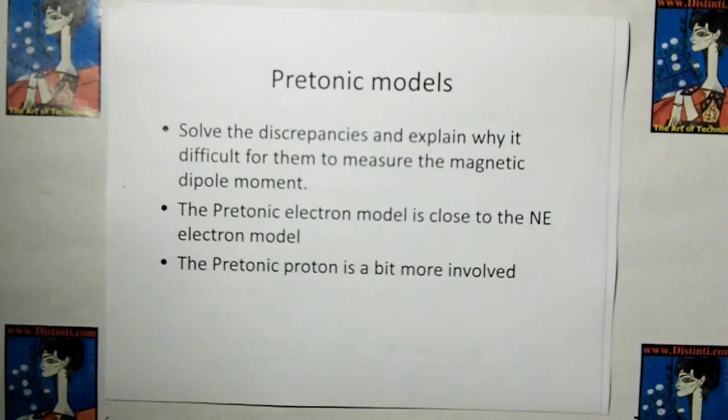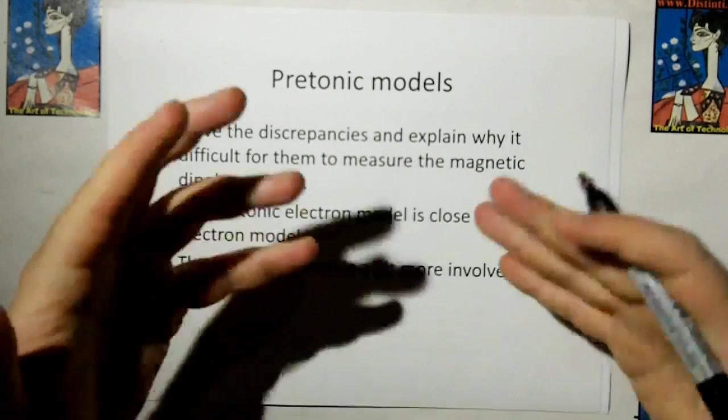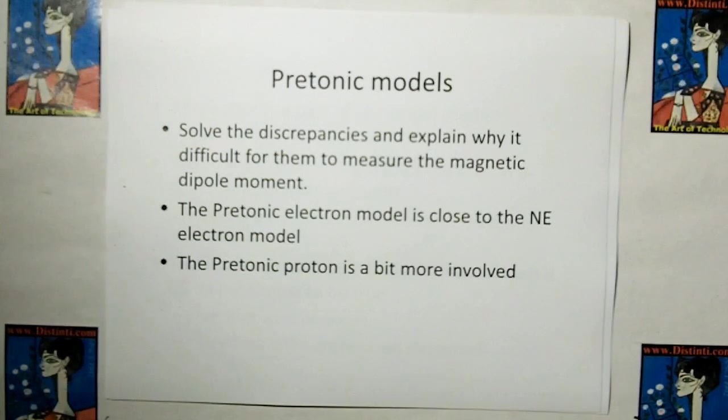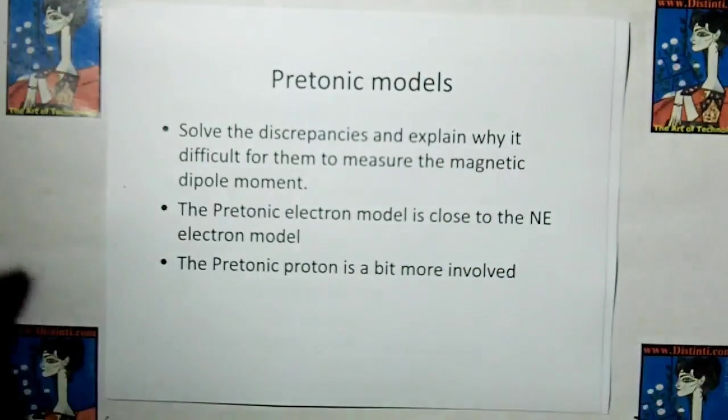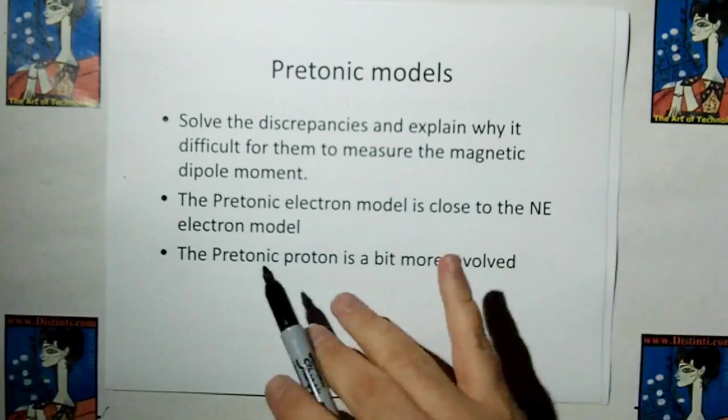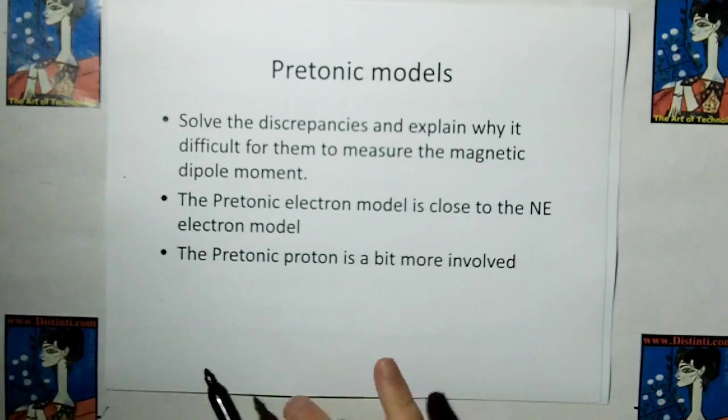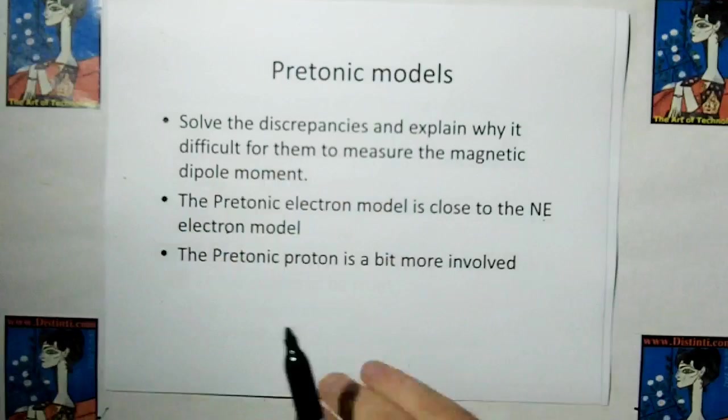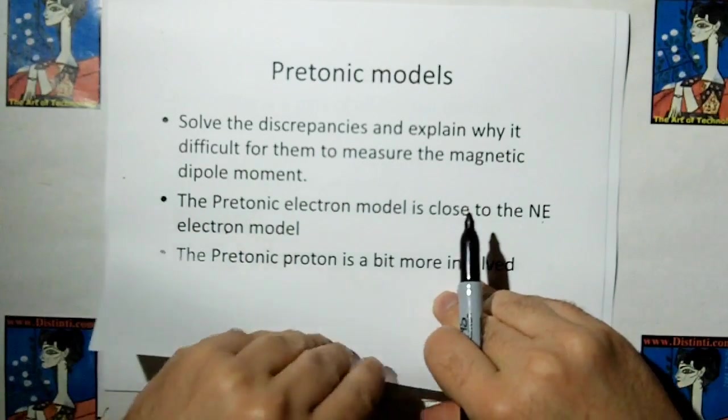But the pre-tonic models, they're going to solve the discrepancies that I've shown and explain why it's difficult, also show why it's difficult for them to measure the magnetic dipole moment. Major reasons are if you measure it by applying a magnetic field to a particle, but a magnetic field is going to change the state of the particle. They don't even understand their own Heisenberg uncertainty principle. And the pre-tonic model, the electron is close to the new electromagnetism model, but the pre-tonic proton is a little bit more involved.